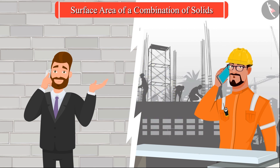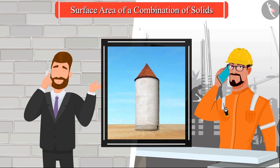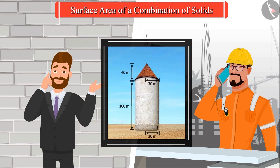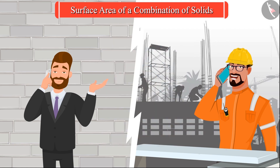But before that, can you tell me about the shape and the measurement of the warehouse? The company's warehouse is in the form of a combination of a cylinder and a cone, whose heights are 100 m and 40 m respectively, and the radius of the base of both is 30 m. Okay, I'll tell you in some time.